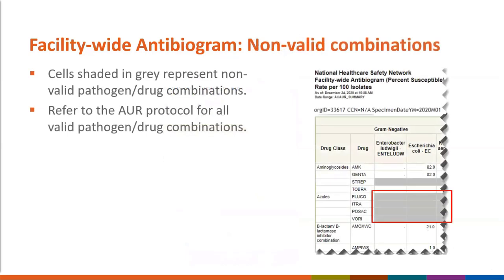Another thing to point out on this default report is that some cells are gray-shaded. Cells shaded in gray represent non-valid pathogen-drug combinations. Users can refer to the AUR protocol for a complete list of all valid combinations.